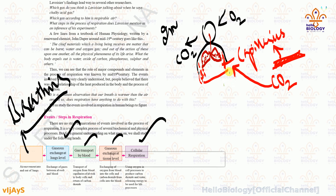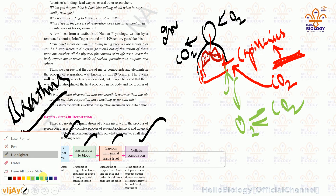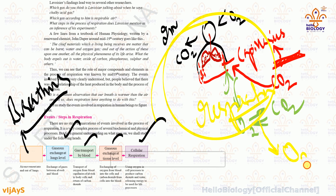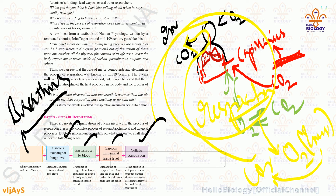In the gas exchange step, carbon dioxide goes out and oxygen comes in. In the fourth and final step — cellular respiration — the cell uses oxygen, energy is produced, and after energy is produced, carbon dioxide is released and exits the body. These are the basic five events of respiration.